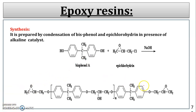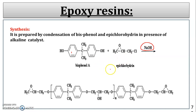The next polymer is epoxy resin, also prepared by condensation polymerization. Two different monomers are used: bisphenol A and epichlorohydrin. Bisphenol A has two phenol rings connected through a carbon bearing two CH₃ groups. Epichlorohydrin has the structure CH₂-CH with an oxygen ring and a chlorine atom. In the presence of alkaline catalyst NaOH, n units of bisphenol A and epichlorohydrin react.